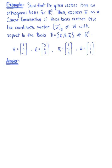Show that the given vectors form an orthogonal basis for R3. Then express vector w as a linear combination of these basis vectors. Give the coordinate vector of vector w with respect to the basis of R3.